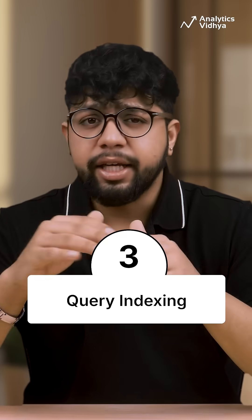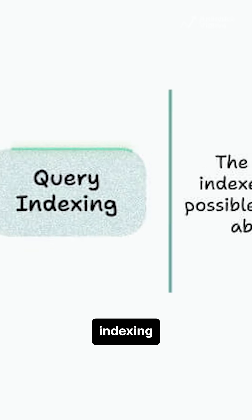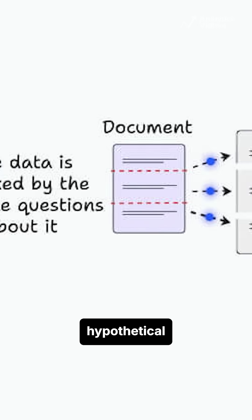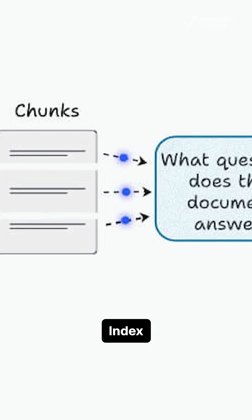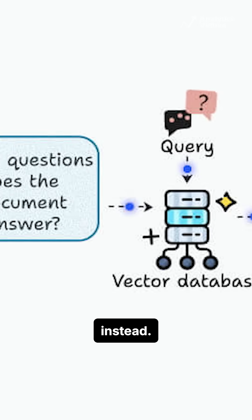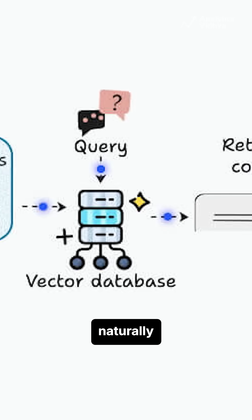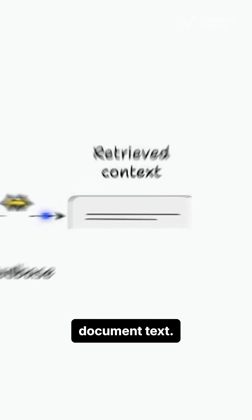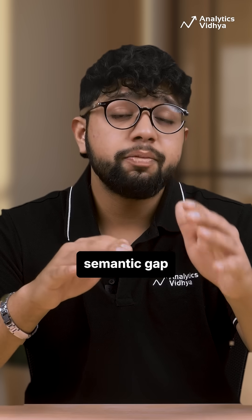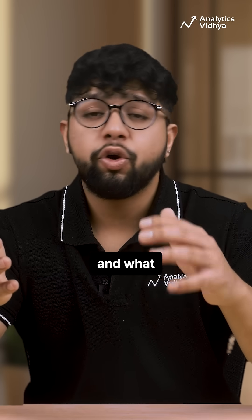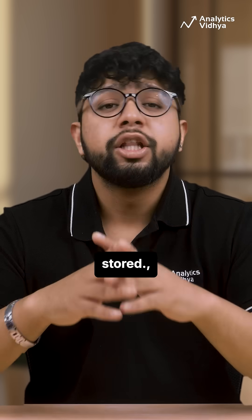Third, query indexing. Instead of indexing raw text, generate hypothetical questions the chunk could answer, then index those questions instead. Users' queries naturally align better with questions than raw document text, which closes the semantic gap between what users ask and what you have stored.